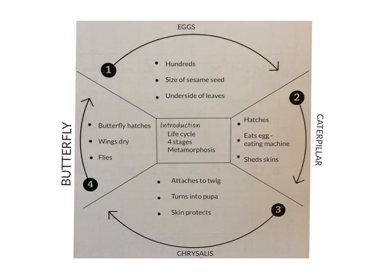This is called a cyclical plan because it goes around in a cycle which just keeps repeating. We have four parts to our cycle, which means that we are going to have six paragraphs in our piece of writing.